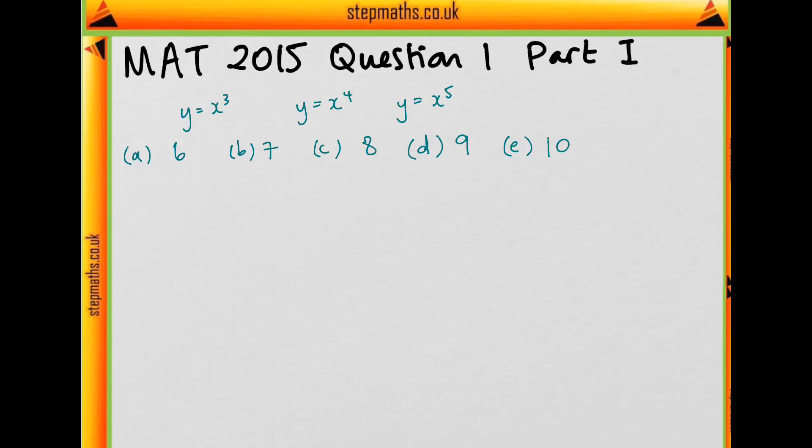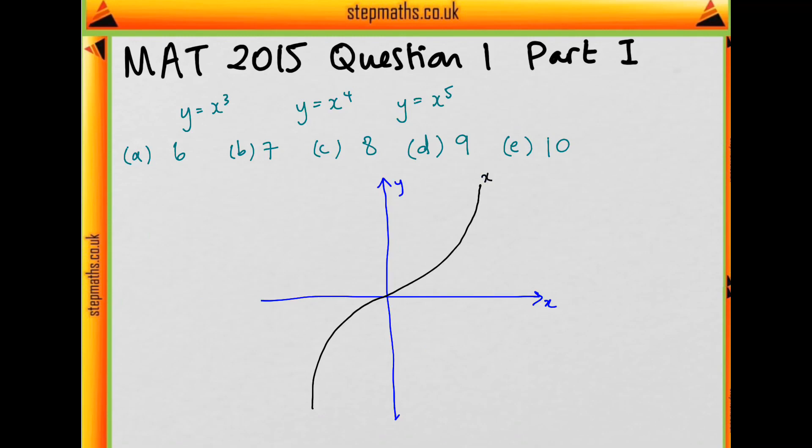So the easiest way to do this would be to just draw the graphs. I'm going to draw the axes just so I can draw the graphs more easily, but we don't need to consider these when we are counting our regions. So x³ would just be something like this. That's x³.